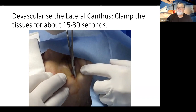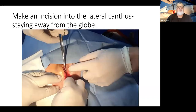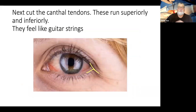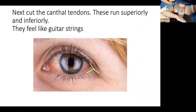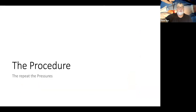We clamp the tissues for about 15 to 30 seconds, then let go and make an incision at the lateral canthus, staying away from the globe. The aim is to cut the canthal tendons, which run superiorly and inferiorly. They twang like a guitar string when you go through them, and that releases the pressure.